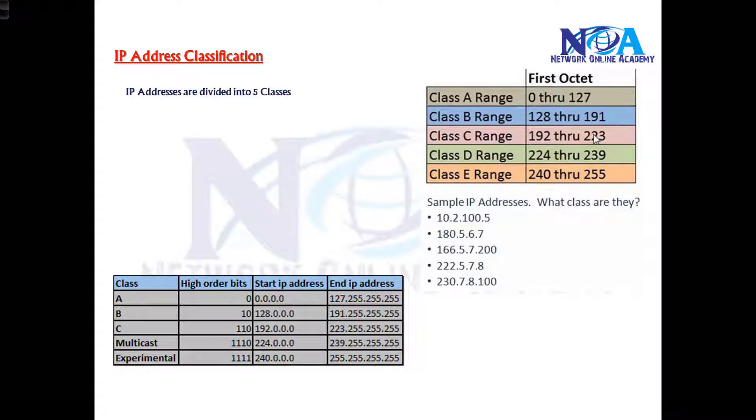We have something like ABC classes, ABCDE. So any address in the range of 0 to 127, if you see any address starting from 0 to 127, we need to understand that it is a Class A. And any address ranging from 128 to 191 is in the range of Class B. Any address in the range of 192 to 223 is in the Class C.